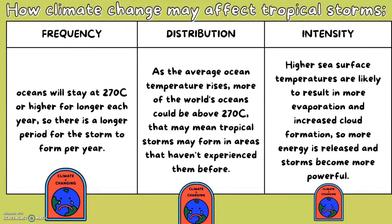How climate change may affect tropical storms. In terms of frequency, the oceans will stay at 27 degrees Celsius or higher for longer each year due to climate change, so there is a longer period for storms to form. For distribution, as the average ocean temperature rises, more of the world's oceans could be above 27 degrees Celsius, which may mean tropical storms form in areas that haven't experienced or prepared for them before. For intensity, higher sea temperatures are likely to result in more evaporation and increased cloud formation, so more energy is released and storms become more powerful.